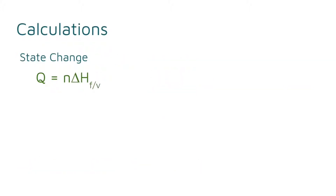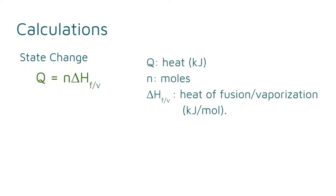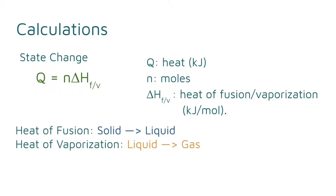For state change, there is a slightly simpler equation. You take the number of moles and multiply by either the heat of fusion or the heat of vaporization. Both of these are constants that change depending on the substance. N stands for moles; delta H stands for heat of fusion or heat of vaporization — you'll see a subscript F or V depending on which one. Heat of fusion is when the substance is melting, going from solid to liquid. Heat of vaporization is when the substance is boiling, going from liquid to gas.